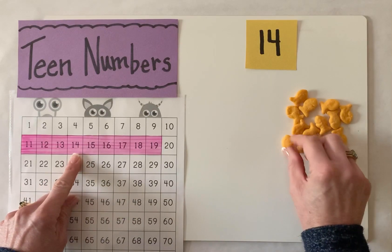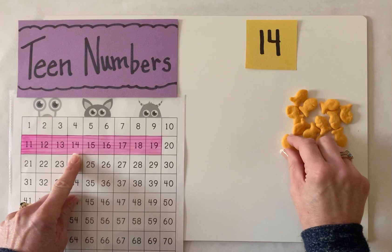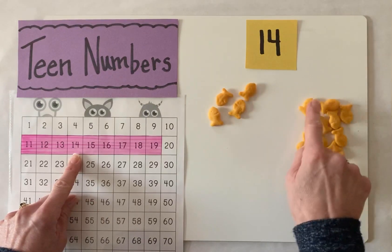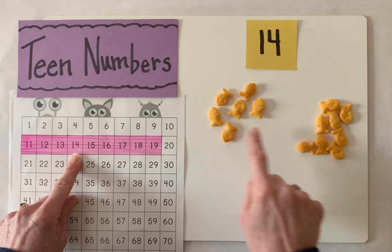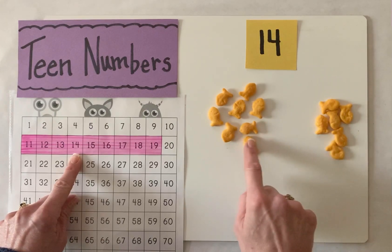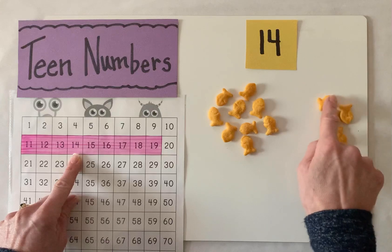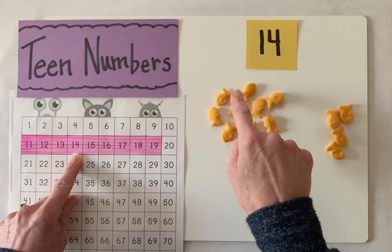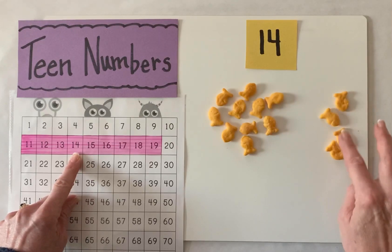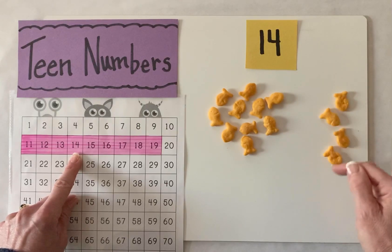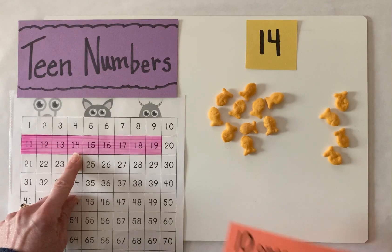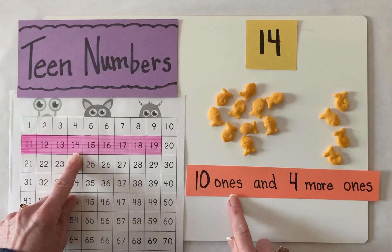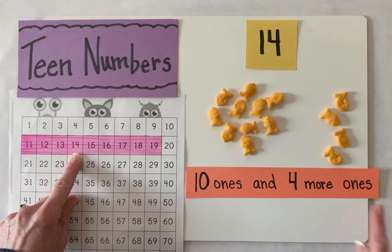Let's first count out 10 ones: 1, 2, 3, 4, 5, 6, 7, 8, 9, 10. This is 10 of my ones. And if you look over here, you can see that I have four more ones. So the number 14 means 10 ones and 4 more ones.